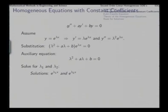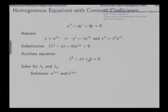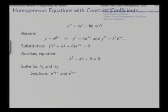We assume y equal to e to the power λx and then simply differentiate it twice. The first derivative is λ times e to the power λx and the second derivative is λ² times e to the power λx. Inserting these three expressions into the differential equation, since the exponential part cannot be zero, for the equation to be satisfied we must have λ² + aλ + b = 0, which is called the auxiliary equation. Since this is a quadratic equation, we expect two roots λ₁ and λ₂, giving two solutions e^(λ₁x) and e^(λ₂x).